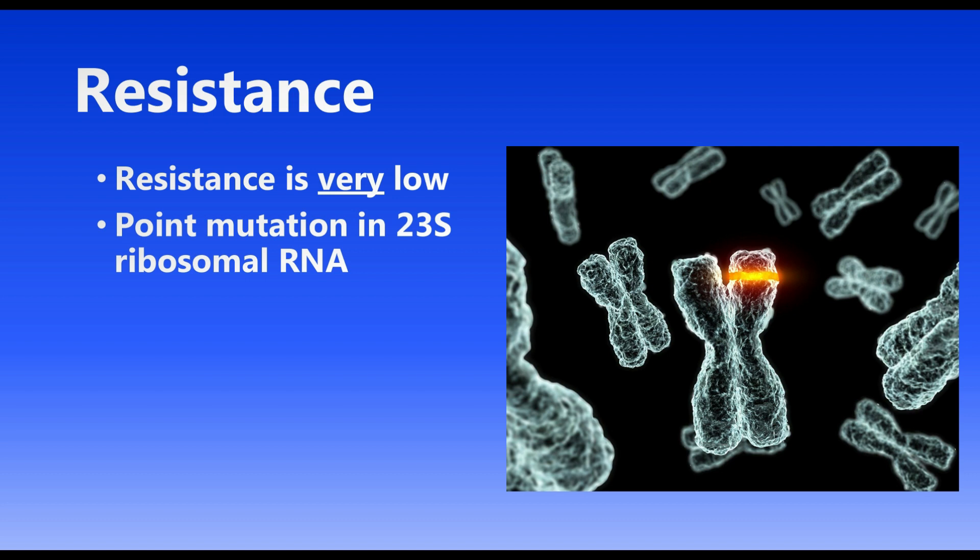Finally, in terms of resistance, resistance to Linazolid is actually pretty low for now, fortunately. That's why it's one of those big gun antibiotics. But there are some bacteria that can create point mutations in the 23S ribosomal RNA so that Linazolid cannot bind. This is being seen in some strains of Enterococcus as well as Staph aureus. Who knows, maybe in a couple of years there will be a lot more bacteria resistant to Linazolid, which is really unfortunate and scary.